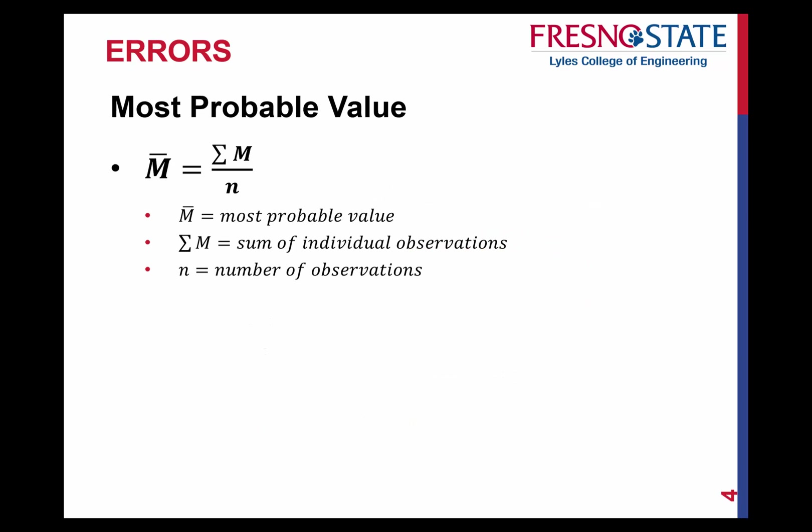Now, the most probable value is simply the mean. You take ten observations, take the average of all ten observations, and that gives you the mean — and that is what your most probable value is.